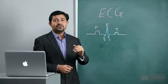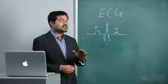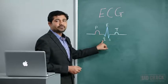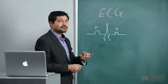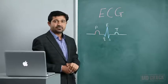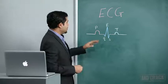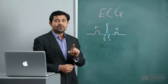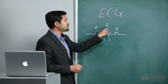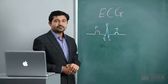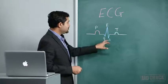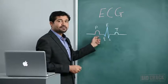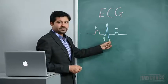A short note about nomenclature: the Q wave is the first negative wave following the P wave. Sometimes the Q wave might be absent. The R wave is the first positive wave following the P wave. The S wave is the second negative wave following the P wave.